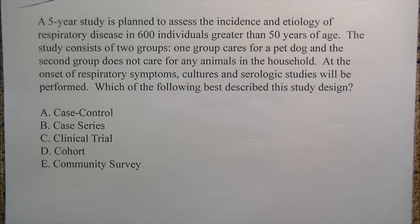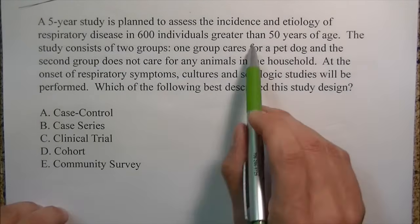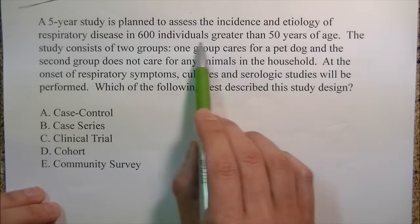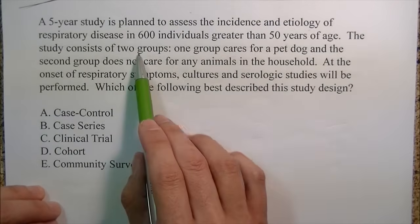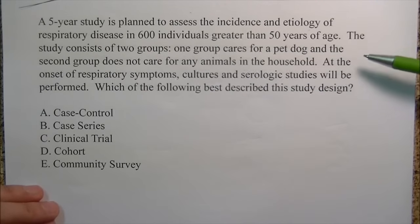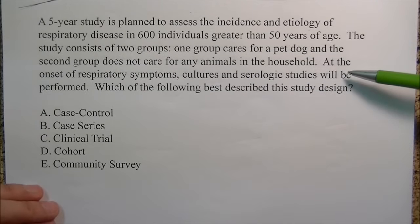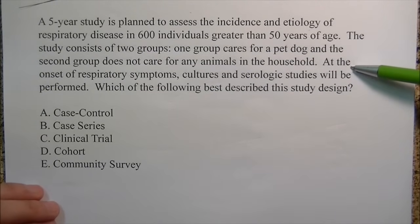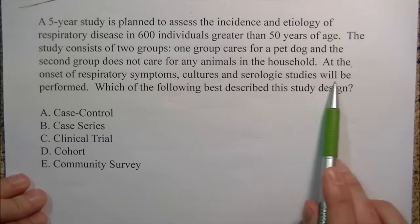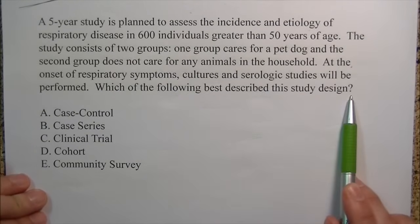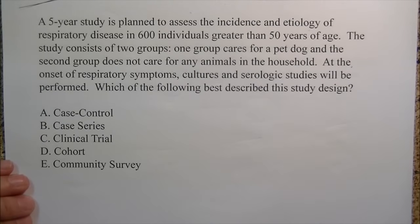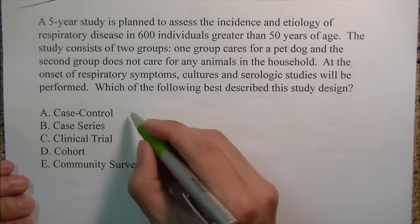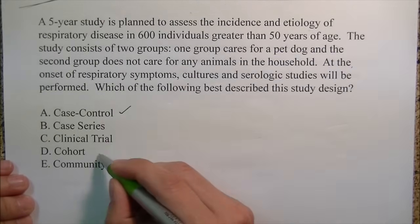The next one says a five-year study is planned to assess the incidence and etiology of respiratory disease in 600 individuals greater than 50 years of age. The study consists of two groups: one cares for a pet dog and the second does not care for any animals. At the onset of respiratory symptoms, cultures and serological studies will be performed. Which of the following best describes the study? When we see this, they're trying to see if you know the difference between case control and cohort.